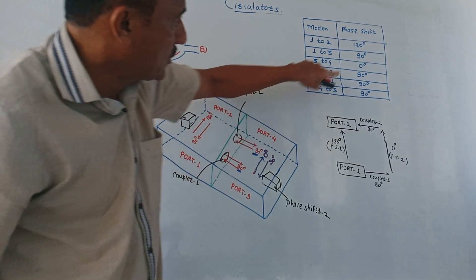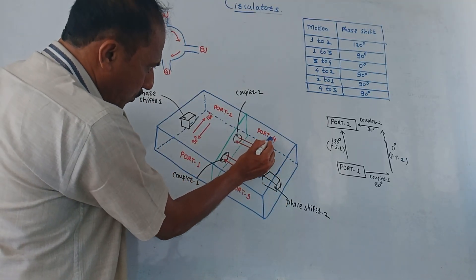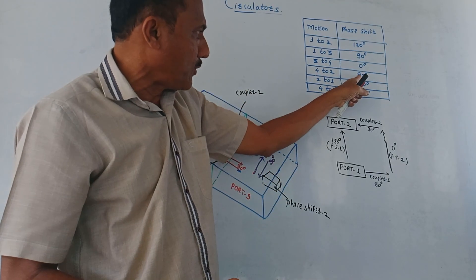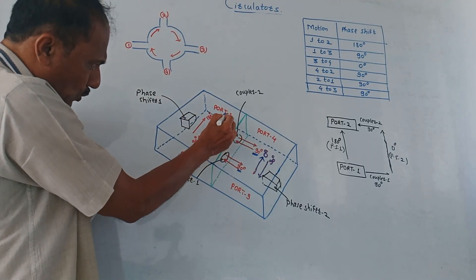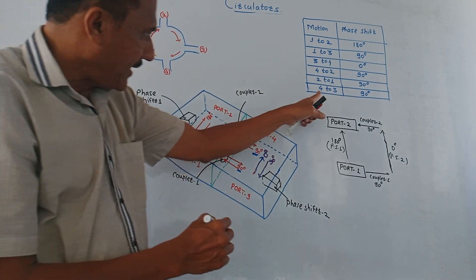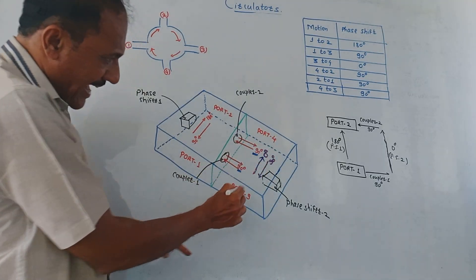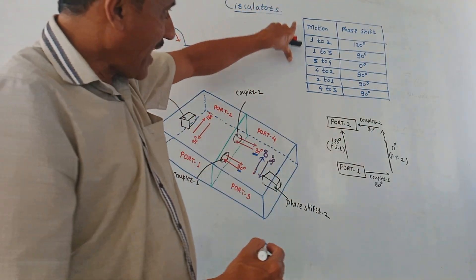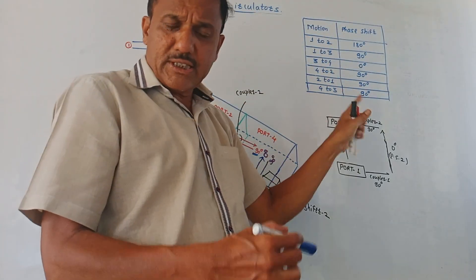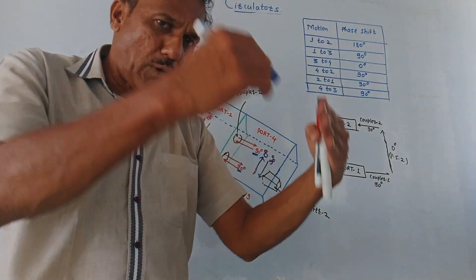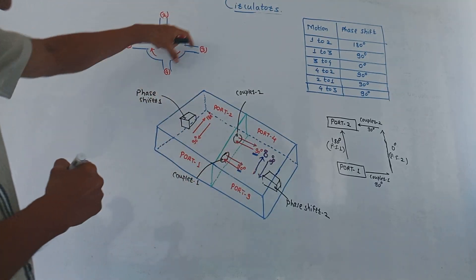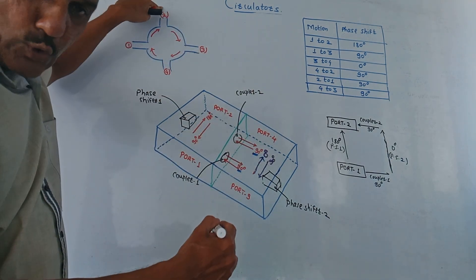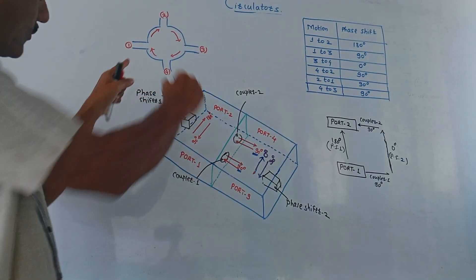From port 2 to port 1, there is a phase shift of 90 degrees. From port 4 to port 3, the wave passes through phase shifter 2 which produces a phase shift of 90 degrees. These values are written in tabular form for reference — this is the phase provided to the wave when it passes from one port to another port.